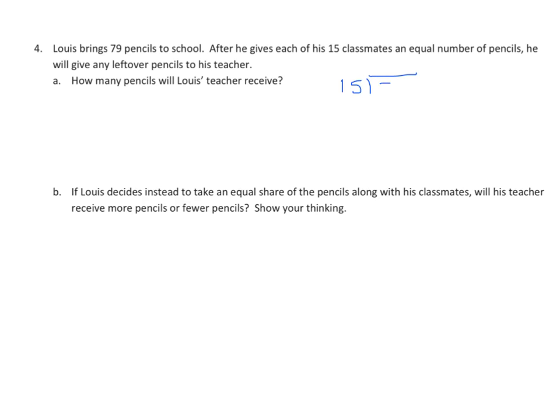So we have 15 classmates, they're going to divide 79 pencils. I like my 15s, they're easy to work with. I know that 2 fifteens is 30, and 4 fifteens must be 60. And from there I can add 15 more and get to 75, 5 fifteens. So I'm going to multiply 5 times 15, I get 75. We subtract 9 minus 5 is 4. We have a remainder of 4. So Louis's teacher will receive 4 pencils.